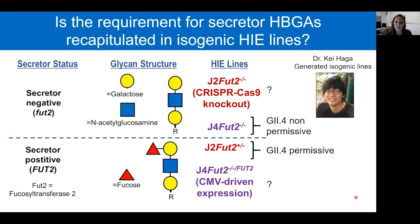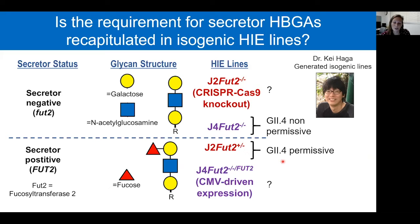In our HIEs, we wanted to ask whether isogenic HIE lines with the same genetic background—aside from manipulation of FUT2—would be permissive to infection. A former postdoc, Kay Haga, generated these isogenic lines. He took our parental J4, which is secretor-negative and non-permissive to GII.4 infection, and made it secretor-positive by addition of CMV-driven constitutively expressed FUT2. He also took our secretor-positive parental line J2 and knocked out FUT2 using CRISPR-Cas9.